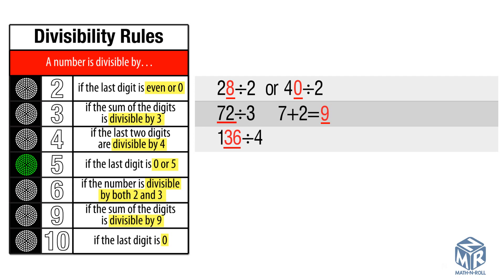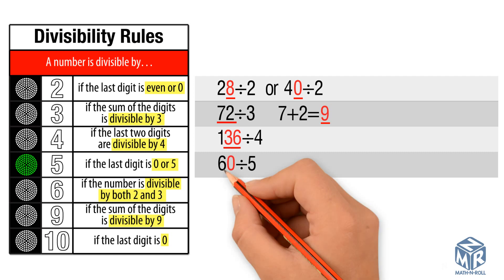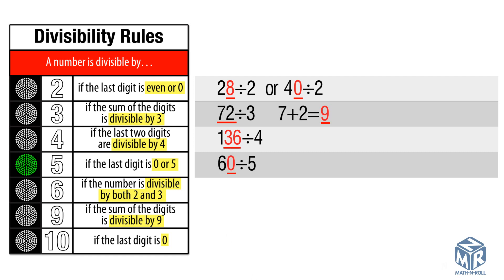A number is divisible by 5 if the last digit is 0 or 5. 60 divided by 5: the last digit is 0, so 60 is divisible by 5. 75 divided by 5: the last digit is 5, so 75 is divisible by 5.